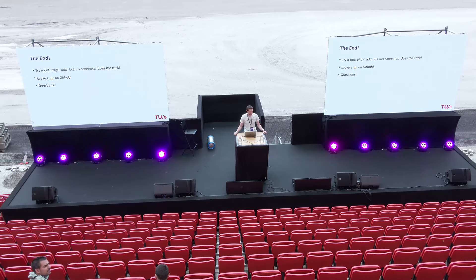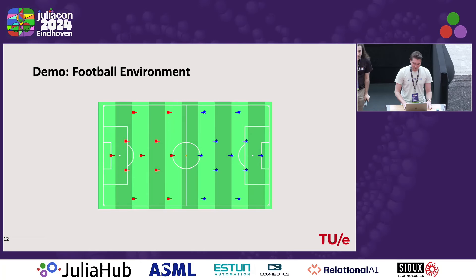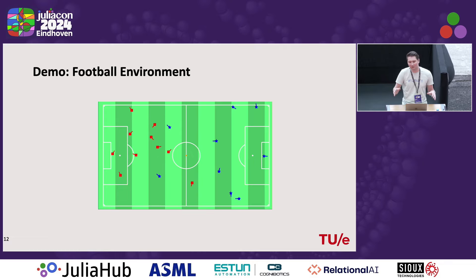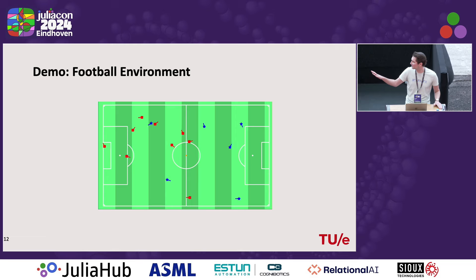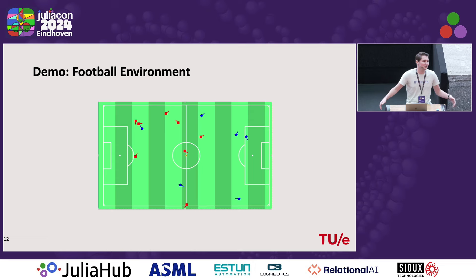How many agents can you actually add? How does it scale — can you add a million agents? It depends on how expensive your transition function is. For the football environment, it solves a differential equation under the hood to move agents through time, so 22 agents was already quite expensive. It also depends on your update frequency. Hundreds of thousands of agents is probably possible if your transition functions are really cheap, but that's the main depending factor.